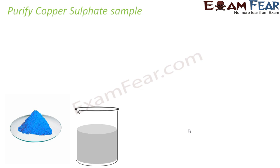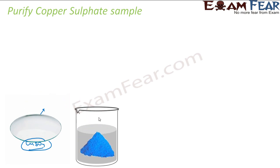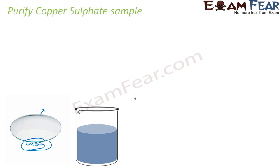In the next case we will try to purify a copper sulphate sample. We have an impure copper sulphate sample and we need to purify it with unknown impurities. What we do is dissolve the copper sulphate in a minimum amount of water, then filter out the larger impurity particles — big stone-like particles — using filter paper.